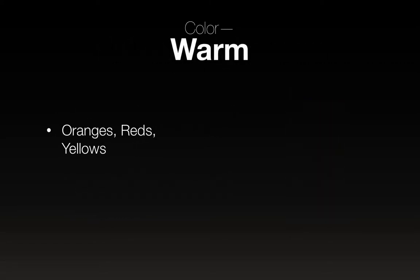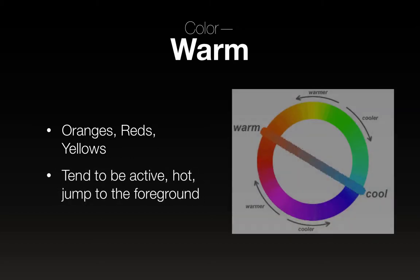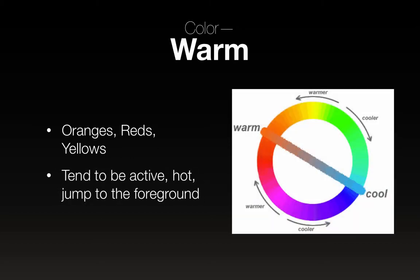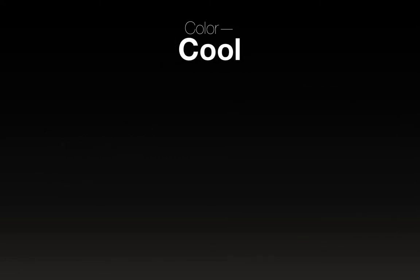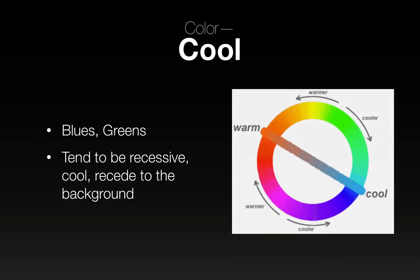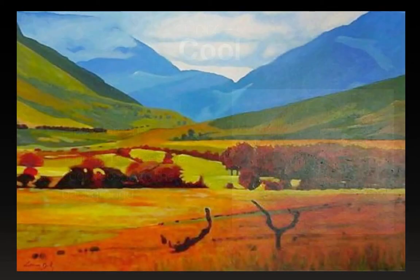Warm colors — basically oranges, reds, and yellows — tend to be active and hot; they jump to the foreground. Cool colors are blues and greens; they tend to be recessive and recede to the background. Interestingly, this is the opposite of physics: in physics the warmer colors are blue and green, and the cooler colors are yellow — red is actually the coolest color in physics. Food for thought.